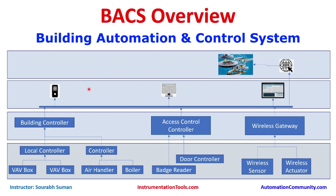This has been a high-level overview of BACS. It gives a good understanding of what building automation looks like. It is similar to a DCS — Distributed Control System — in that it has distributed controls that can be visualized and managed from a central location. That's all about BACS, thank you.